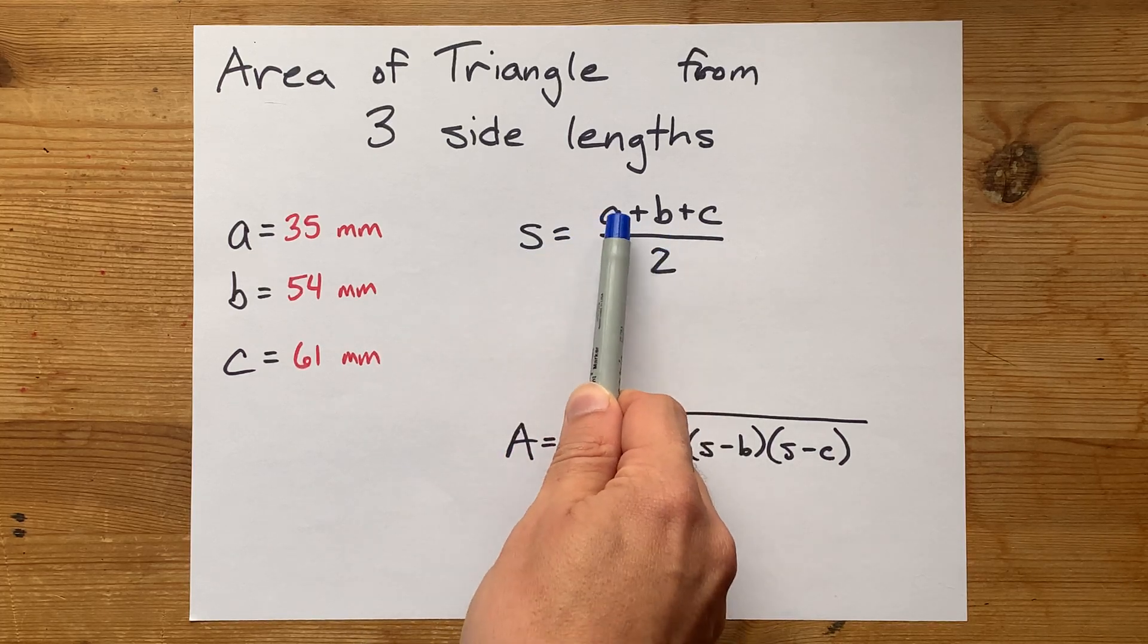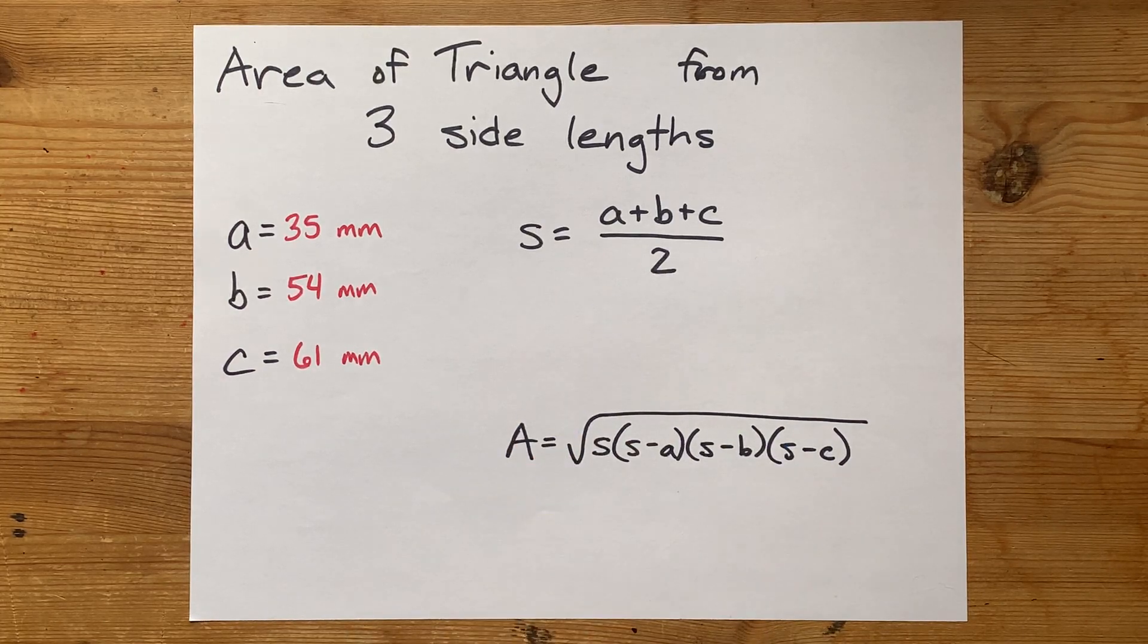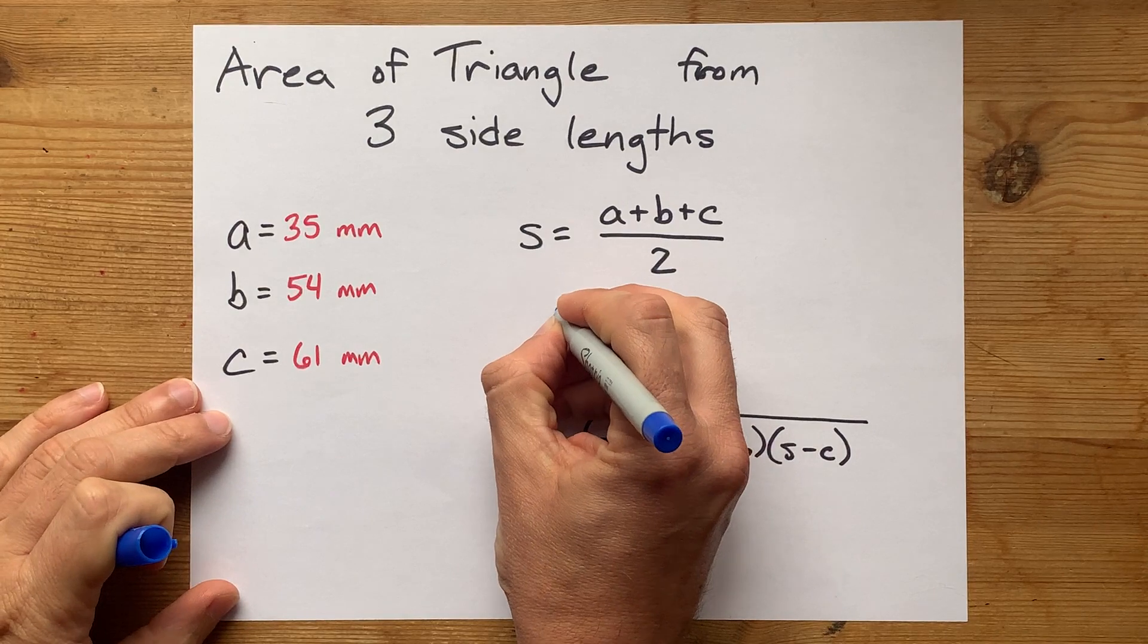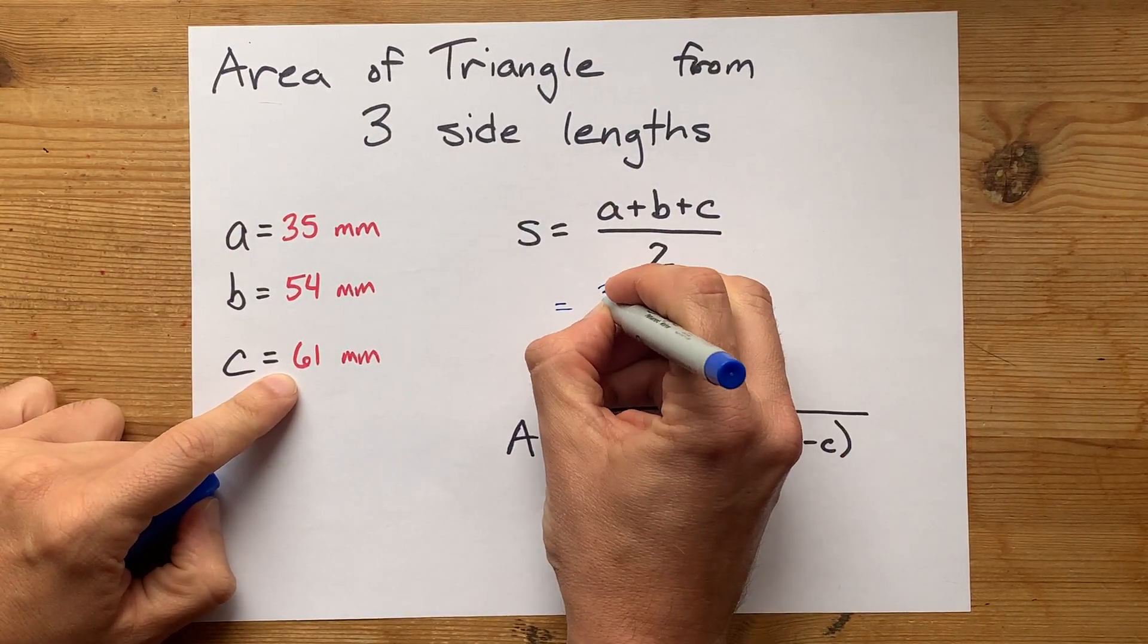It is the perimeter, a plus b plus c, but divided by 2, so it's half of the total perimeter. Let's just jump straight into the formula here. To calculate the semi-perimeter, you add up the three side lengths.